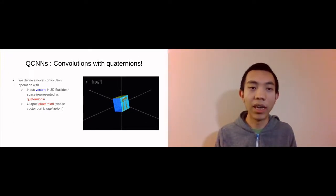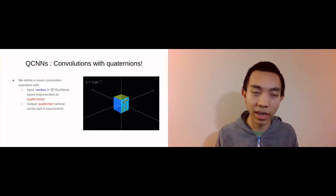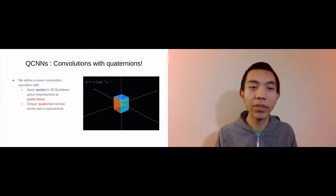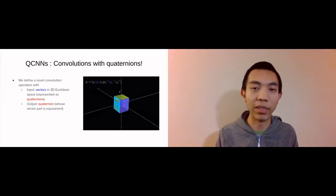Specifically, our kernel takes as input a sequence of vectors in 3D Euclidean space, viewed as quaternions, and outputs a single quaternion whose vector part is equivariant in the manner described.